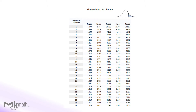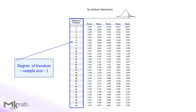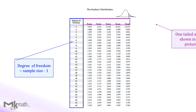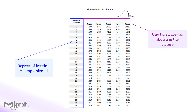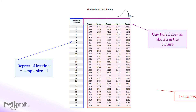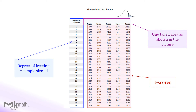Here is the t-table we use. The first column shows the degree of freedom, which we can find by subtracting 1 from the sample size. The top row shows one-tailed area. The intersection of those gives t-scores.